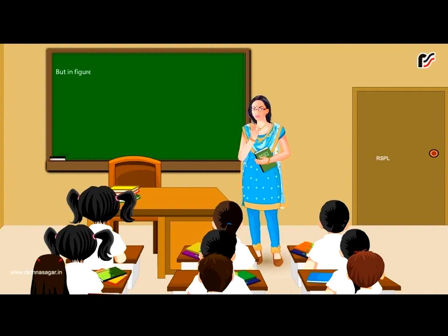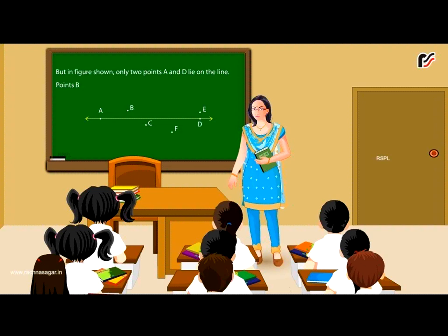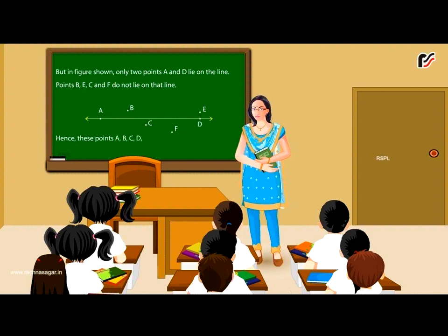But in the figure shown, only two points A and D lie on the line. Points B, E, C and F do not lie on that line. Hence, these points A, B, C, D, E and F are called non-collinear points.